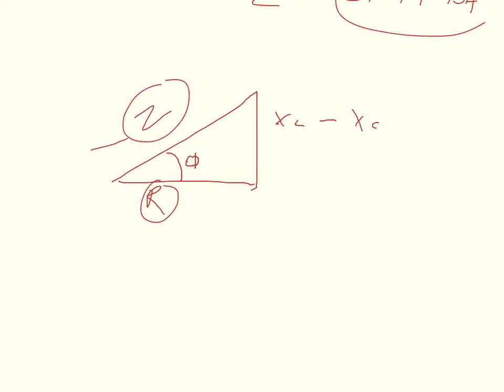So because you already know the impedance and the resistance, you can use the cosine. Now, the textbook defines this phase angle. It defines it as XL minus XC over R is equal to tangent of the phase angle. So that's saying the opposite over the adjacent is equal to the tangent of the angle.